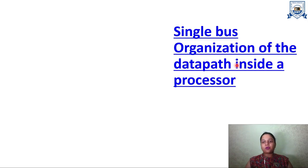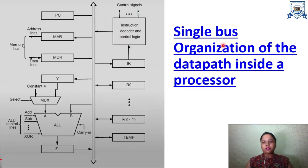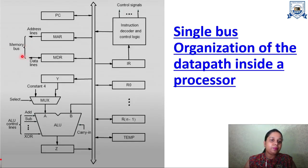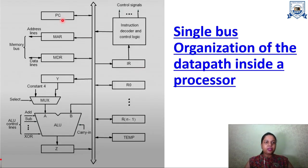Now we will see the single bus organization of the data path inside a processor — how data is transferred among the components using a single bus. The program counter sends its content to MAR. On that address, via the address lines, the data is read from memory and transferred to MDR, the memory data register. Then the content of PC — now in MDR — is transferred to the instruction register.